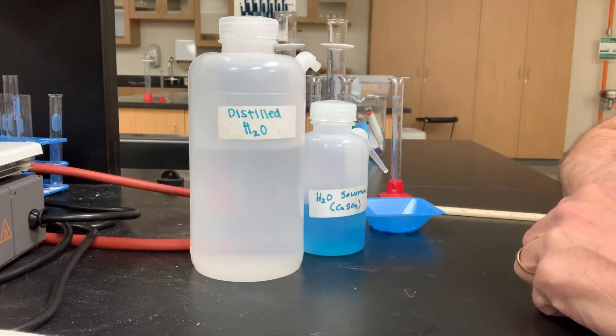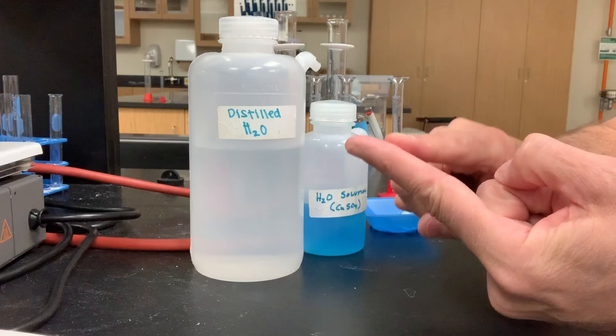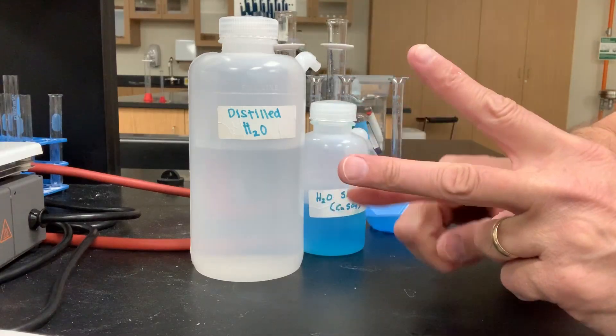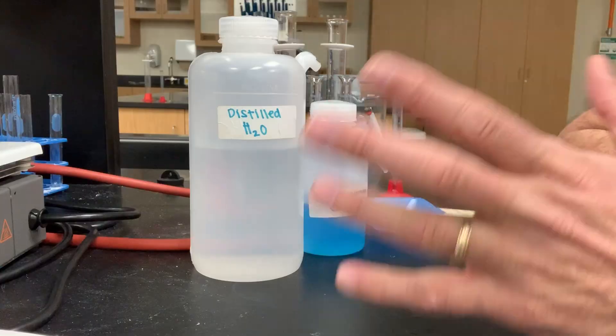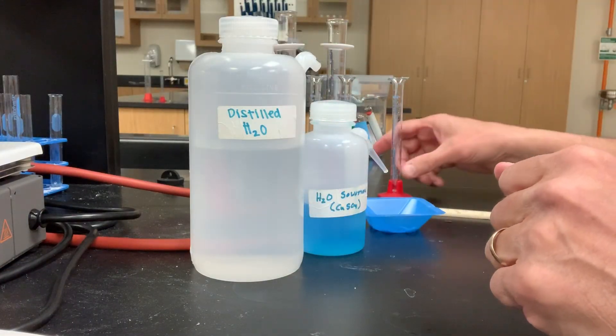Remember, there are two things you need to know to find the density of something: its mass and its volume. Those two things, mass and volume, it's the ratio of mass to volume of a sample.